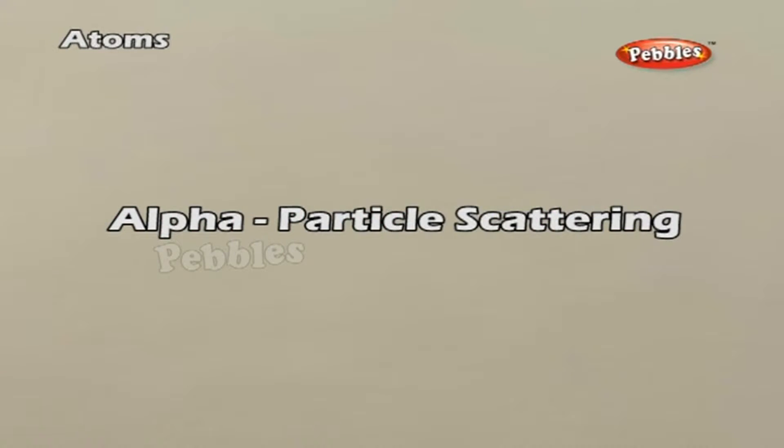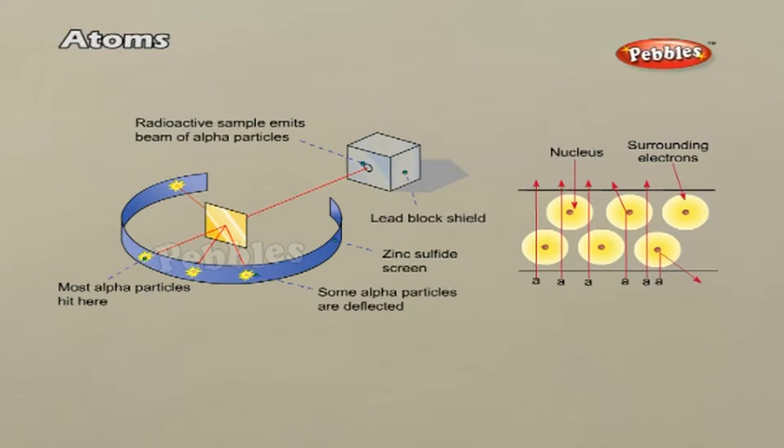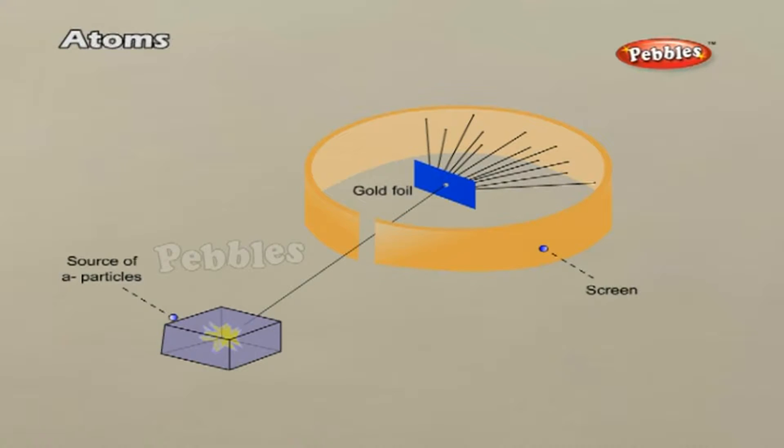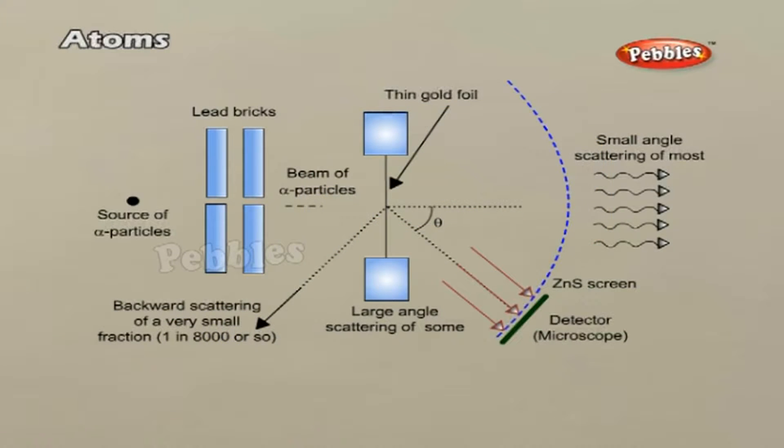Alpha particle scattering: The figure shows a beam of alpha particles emitted from a radioactive source at a thin metal foil made of gold. Alpha particles emitted by a bismuth-214 radioactive source were collimated into a narrow beam by their passage through lead bricks. The beam was allowed to fall on a thin foil of gold of thickness 2.1 times 10 to the power minus 7 meters.